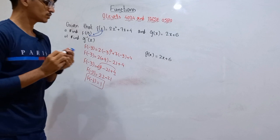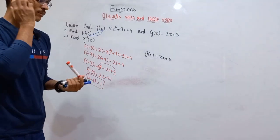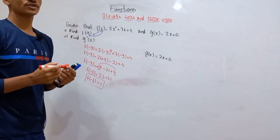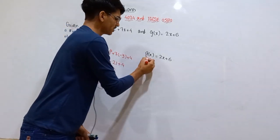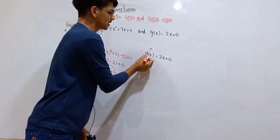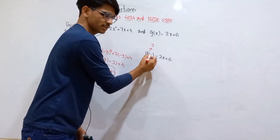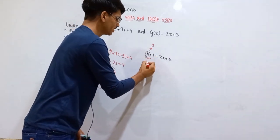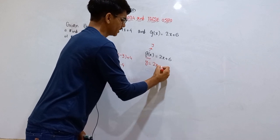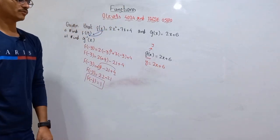You just have to memorize a few steps. The first step is to replace the function by y. In this case the function is g(x), so just replace g(x) by y. So y = 2x + 6. This is our first step — just replace the function with y.